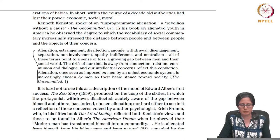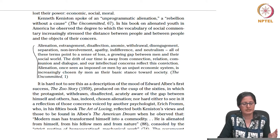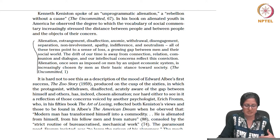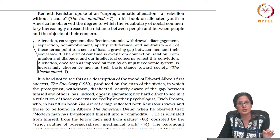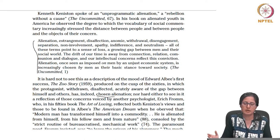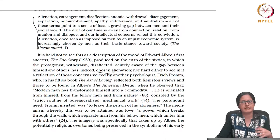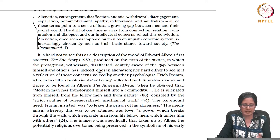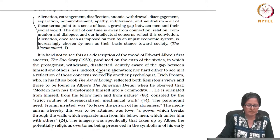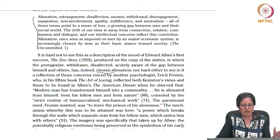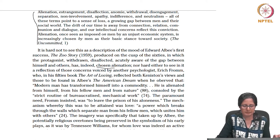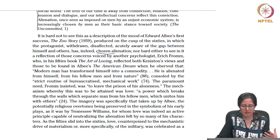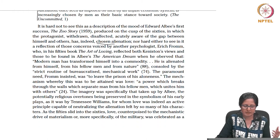The Zoo Story is a play produced on the cusp of the 60s, in which the protagonist is withdrawn, disaffected, acutely aware of the gap between himself and others, and he has chosen alienation. This is a very important term: it is not as if alienation was imposed on him. He chooses alienation. If you see this as a type of individual forced to make such choices because of the circumstances, Albee's American Dream also makes further sense. Modern man has transformed himself into a commodity — alienated from himself, from his fellow men, from nature, controlled by the strict routine of bureaucratized, mechanical work. This becomes characteristic of most of Albee's protagonists.